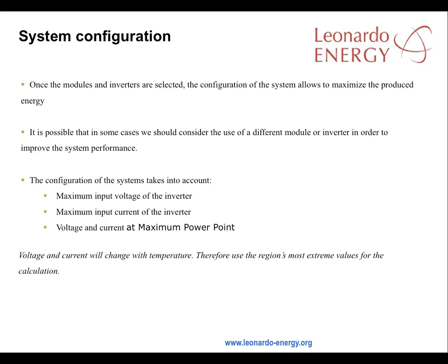Once the modules and inverters are selected, the configuration of the system should allow maximization of produced energy. In some cases, a range of modules and inverters should be considered in order to find the combination that offers the best system performance. The configuration should take account of the maximum input voltage and current of the inverter, and the voltage and current at maximum power point. When designing the solar panel configuration in series and parallels, take account of the fact that voltage and current will change as the temperature changes, so it will be necessary to choose the most extreme values possible in the region when making the calculation.